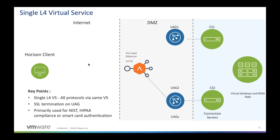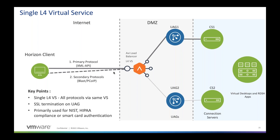The second design option is a single layer four virtual service. In contrast to the first where we had two virtual services — L7 and L4 — in this case we have a single virtual service which is a layer four virtual service. The primary traffic comes in, we send it to the UAG, then secondary protocol traffic — blast or PCoIP — comes and we send it to the same UAG. We have this design option because there could be use cases where NIST or HIPAA compliance is mandatory or smart card authentication is enabled on UAG, so in those use cases we recommend using the L4 virtual service design.